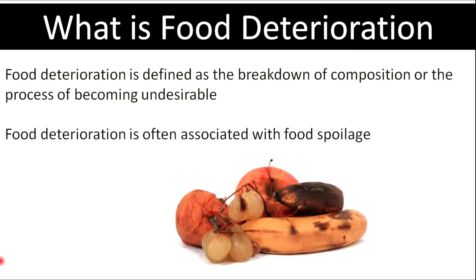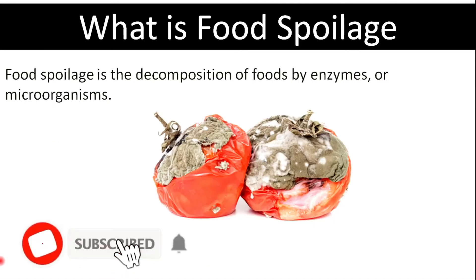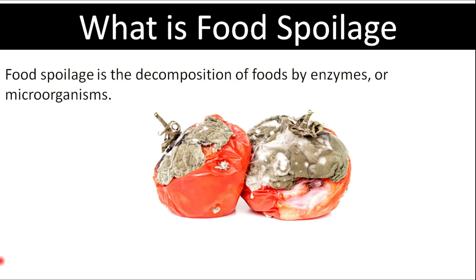Food deterioration is defined as a breakdown of food composition, or the process of becoming undesirable, and it is often associated with food spoilage. Food spoilage is the decomposition of foods by enzymes and microorganisms. The main difference between these two is that deterioration is a stage at which food can still be eaten by humans and will cause no harm, while spoilage means it is unfit for human consumption and may cause food poisoning.